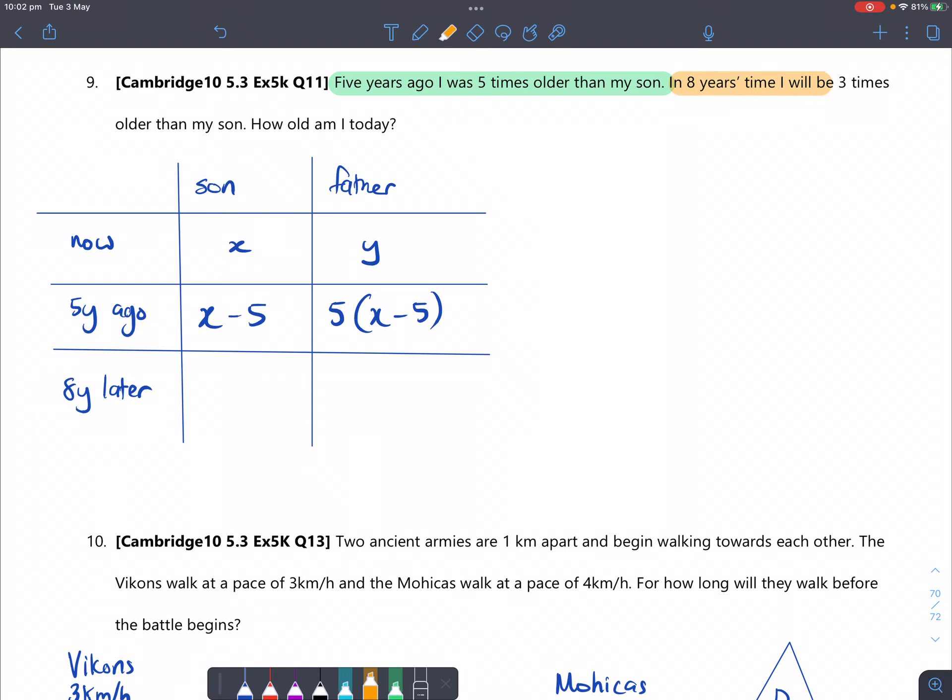Whereas in eight years time I will be three times older than my son. So if the current age is x, then in eight years time the son will be x plus 8, but the father will be three times as older than the son. So it's three times his son's age eight years after, which is 3 times x plus 8.